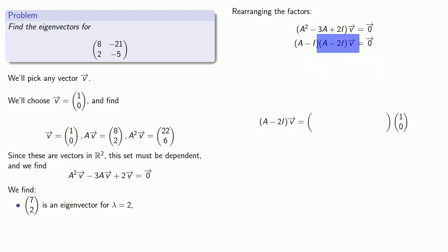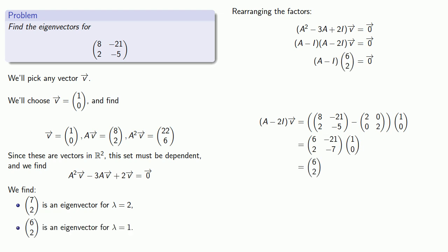So that's (A - 2I) applied to v, and that's going to be (6, 2). And so (6, 2) is an eigenvector for lambda equal to 1.